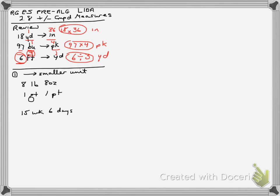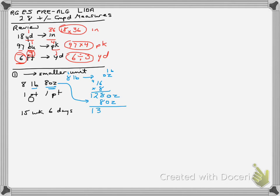So let's say we have 8 pounds, 8 ounces. This is why we call this a compound measurement, because we have 2 units here — both pounds and ounces. We want to convert it all to ounces, because that's the smaller unit. We take our 8 pounds and convert to ounces. There are 16 ounces in a pound, so we multiply 16 by 8, giving 128 ounces, then add the additional 8 ounces for a total of 136 ounces.